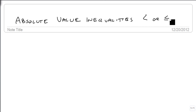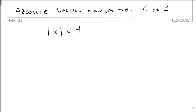We're going to start with a straightforward example. Suppose we have the absolute value of x is less than 4. What we want to know is the range of values that x can be and still be true.